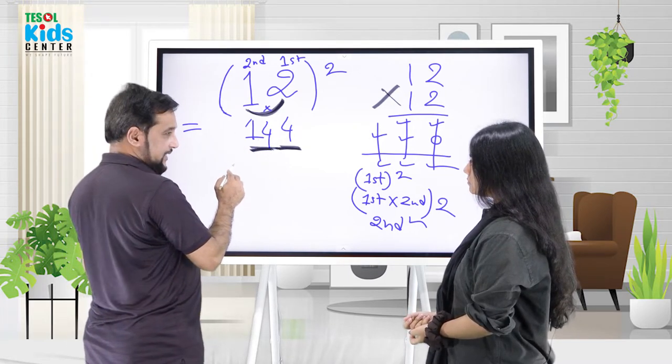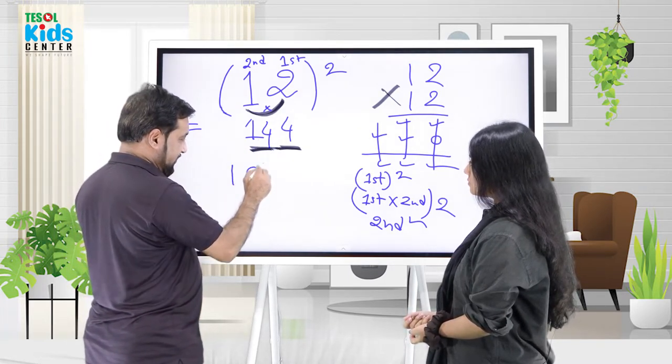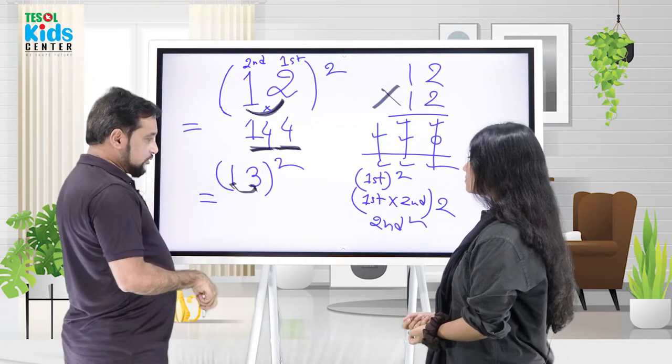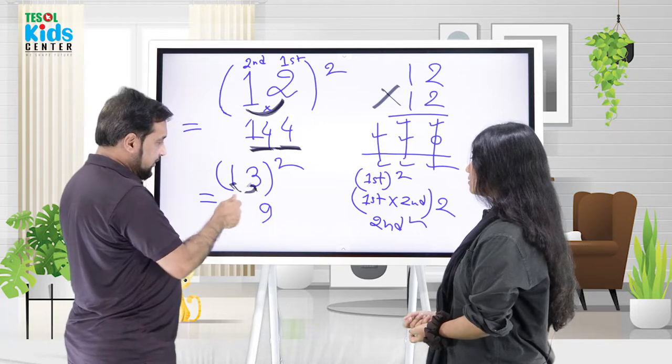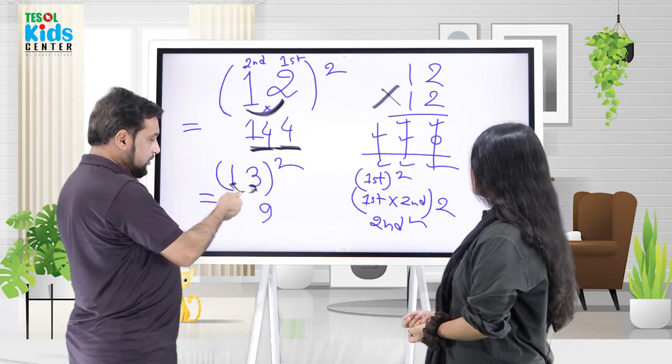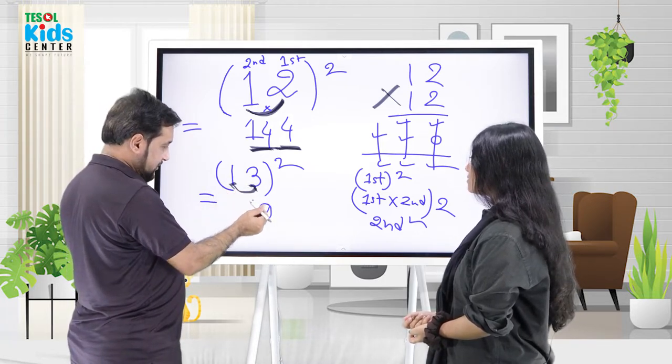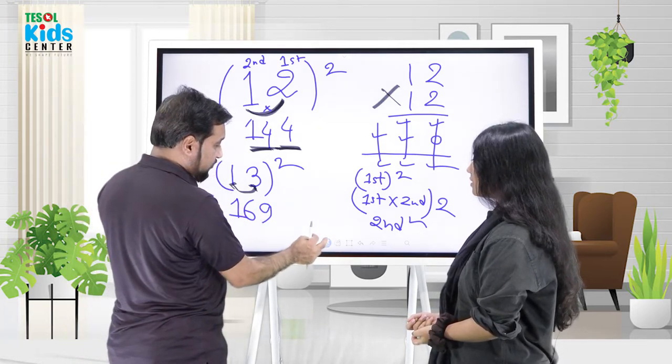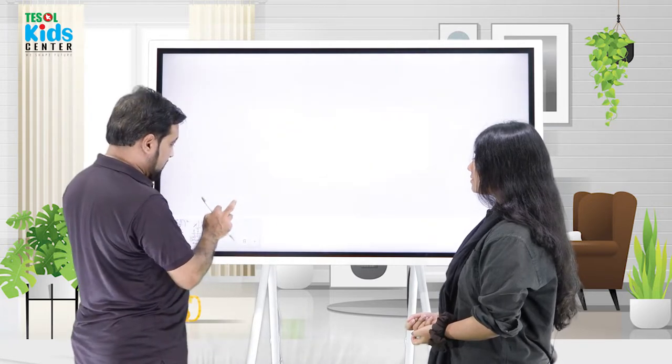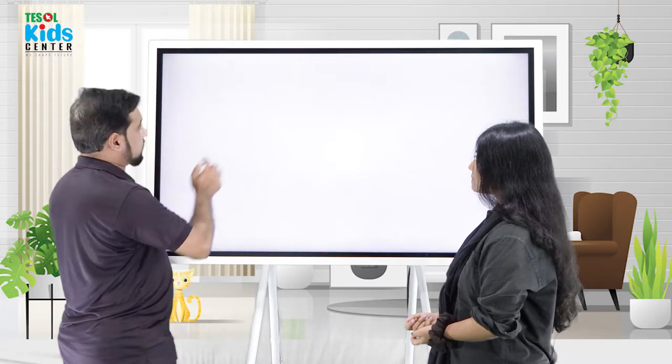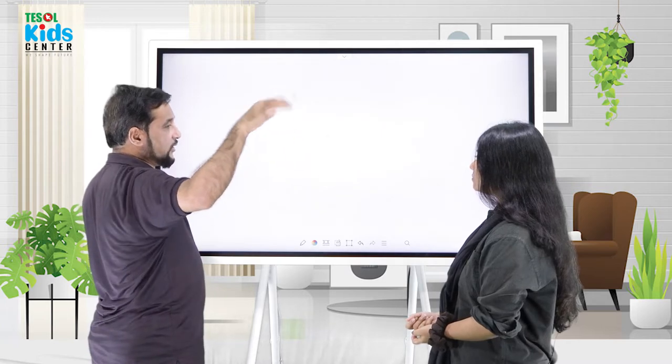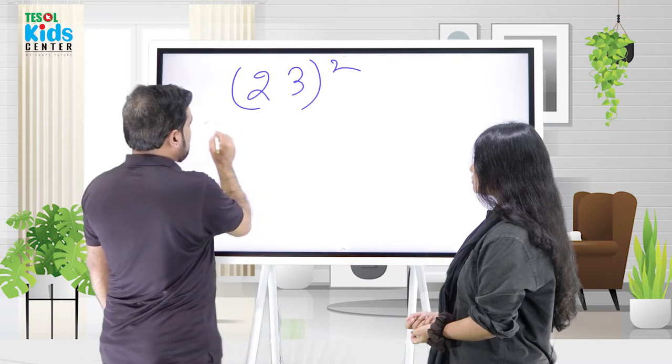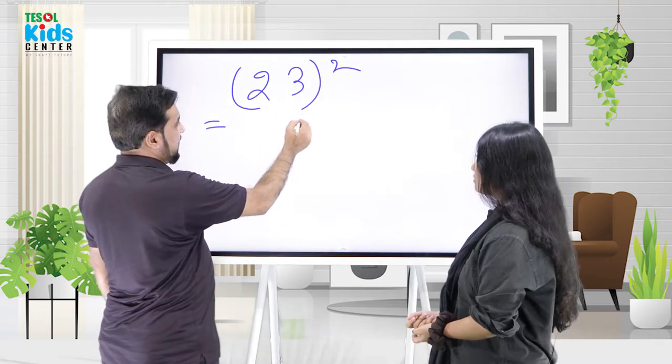Now let's try 13 squared. Square of 3 is 9. Double 3, which is 6. Then 1 squared is 1. So we get 169.